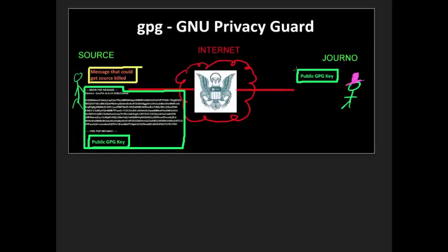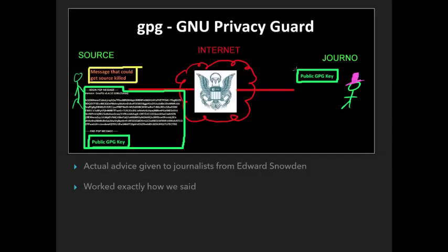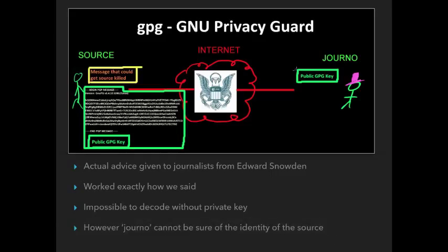Anybody who has the public key can encode and send it for private key decoding. A good example of this is when Edward Snowden gave advice to journalists — this is the actual advice he gave them — and it worked exactly how we described. It's impossible to decode without a private key. However, one cannot be sure of the identity of the source.